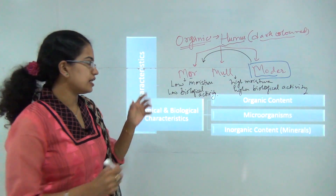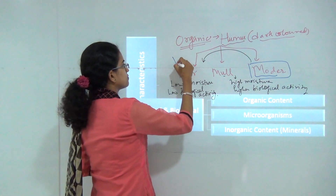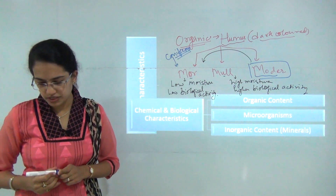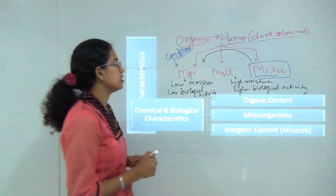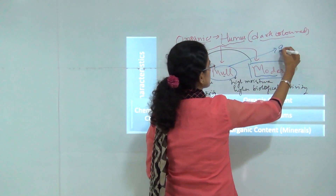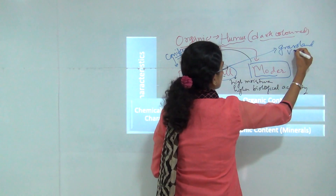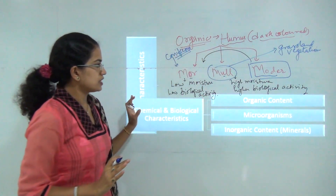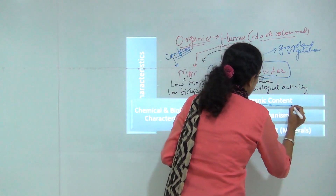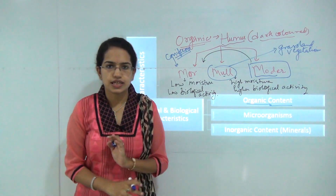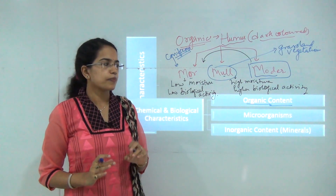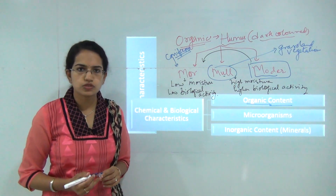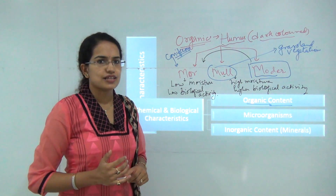Mor humus is usually found in coniferous regions. In contrast, mul is found in grasslands and vegetation areas. With this we cover the organic content and the various characteristics of the soil. In the next session, we would be talking about soil erosion, its causes, and the methods to conserve against soil erosion.